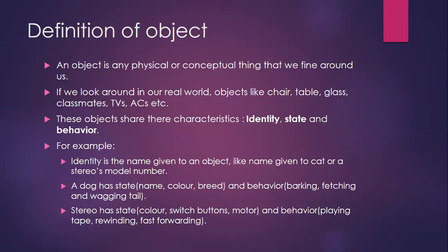Identity is a name given to an object. For example, if you have a pet cat, you must have given it a name — suppose Tom. So the cat's name is Tom, which is its identity. Similarly, a stereo model number: suppose you have a stereo headphone that you bought from Amazon or Flipkart — these have a specific model number.